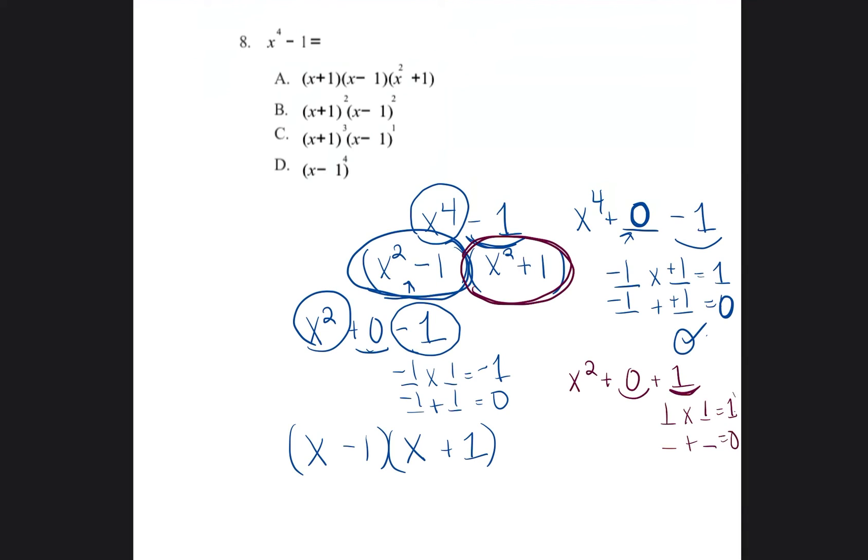Well, one times one equals one, but one plus one does not equal zero. So we're not able to break this down further. We're going to keep it as is: x squared plus one.